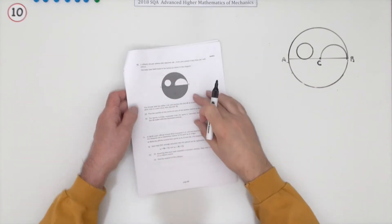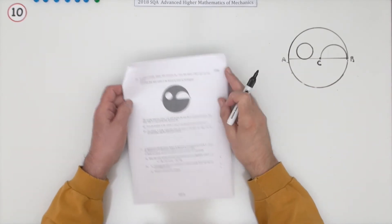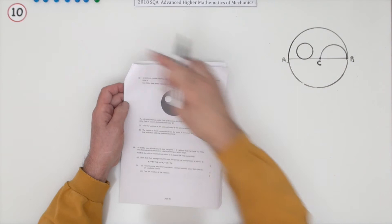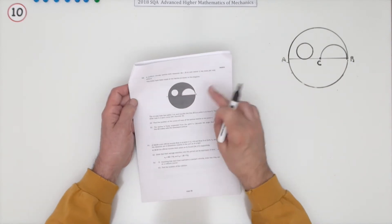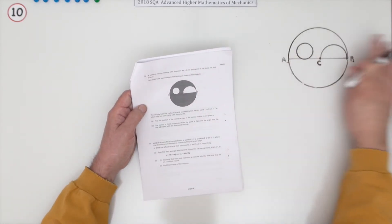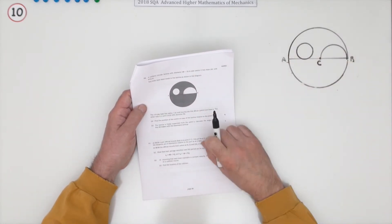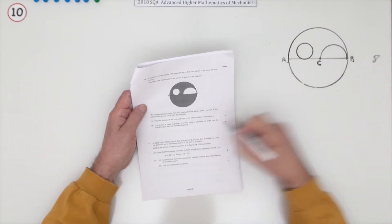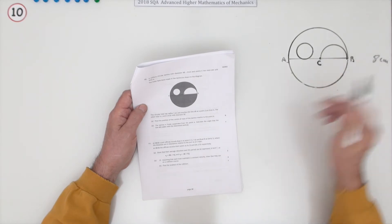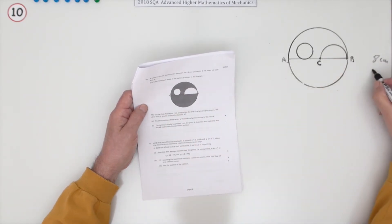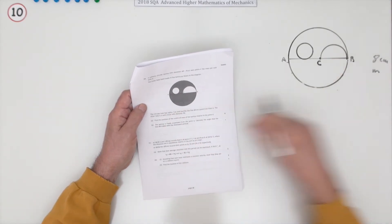Number 10, from the 2018 SQA Advanced Higher Mathematics Mechanics, a 7-mark question on centre of mass. A uniform circular lamina with diameter AB of 8 centimetres has centre C and mass per unit area M.